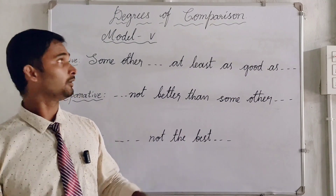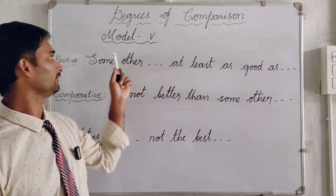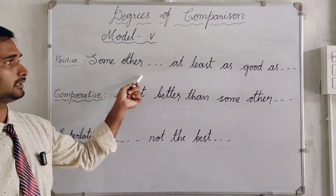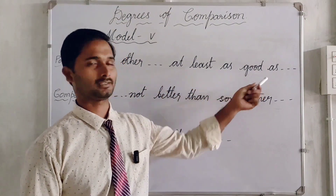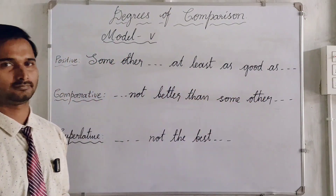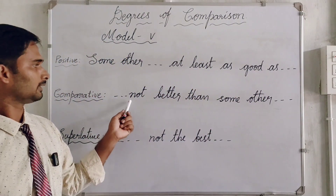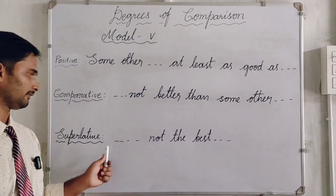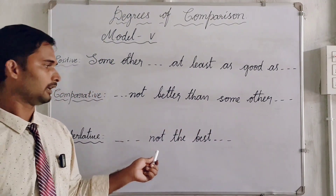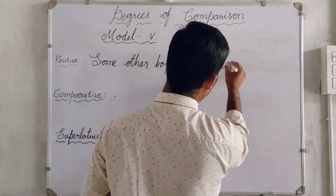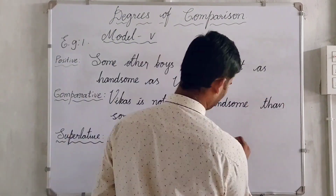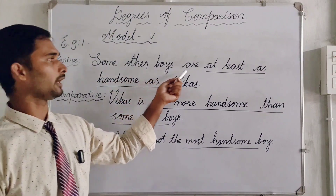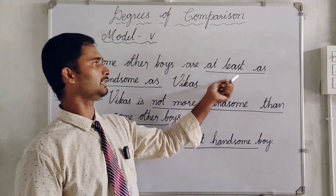Degrees of comparison, model number five. Let us see the key points and hints. Positive: some other [subject] is at least as [adjective] as [subject]. Comparative: not better than some other. Superlative: not the best. Let us learn some examples of model number five.